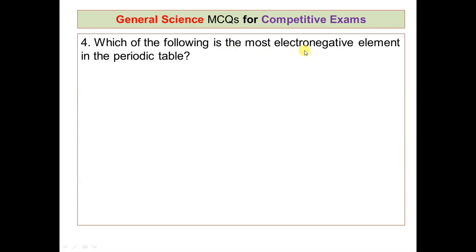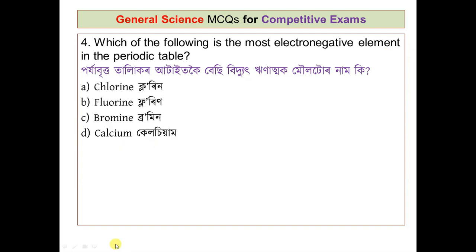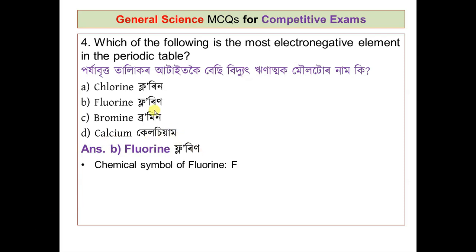Which of the following is the most electronegative element in the periodic table? The options are chlorine, fluorine, bromine, and calcium. The correct answer is fluorine (option B). The chemical symbol of fluorine is F, its atomic number is 9, and its electronegativity value is 3.98.